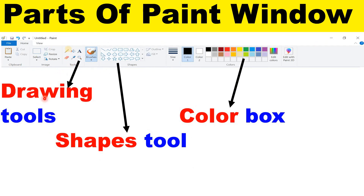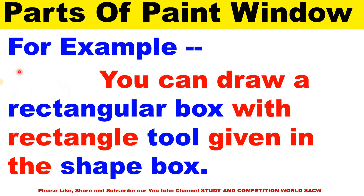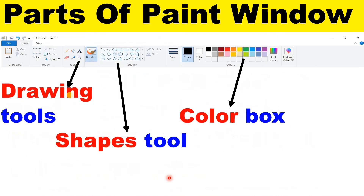These are called drawing tools. These are shape tools — you can pick any shape from here. This is the color box — you can pick any color from it. This is the ribbon. For example, you can draw a rectangular box with the rectangle tool given in the shape box.